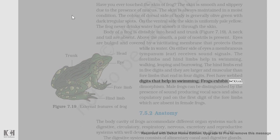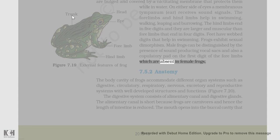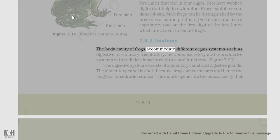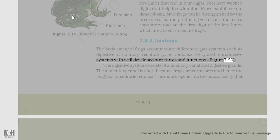Frogs exhibit sexual dimorphism. Male frogs can be distinguished by the presence of sound-producing vocal sacs and also a copulatory pad on the first digit of the forelimbs, which are absent in female frogs. The body cavity of frogs accommodates different organ systems such as digestive, circulatory, respiratory, nervous, excretory, and reproductive systems with well-developed structures and functions (figure 7.20).